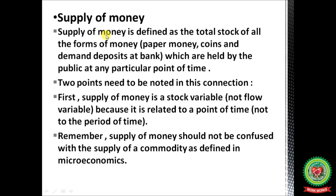Supply of money is defined as the total stock of all forms of money — paper money, coins, and demand deposits at banks — held by the public at a particular point of time. Two points to note: first, supply of money is a stock variable, not a flow variable, because it is related to a point of time, not a period of time.